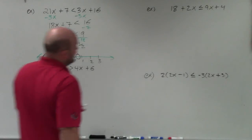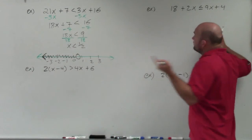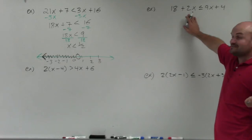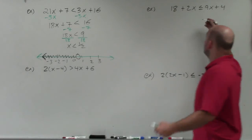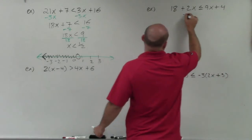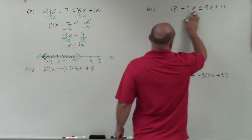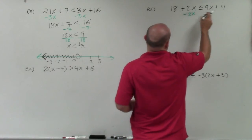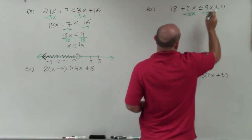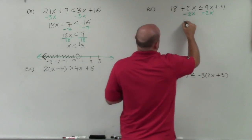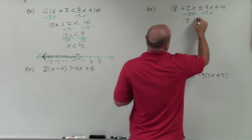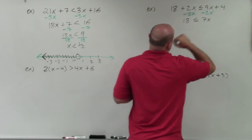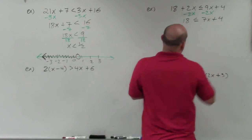Now let's get into the next example. In this case, getting the variable to the left side is going to make the coefficient negative, so I'm actually going to solve with the variable on the right side — which can be a little bit of an issue for many students, because it's not something you're as used to. So I have 18 is less than or equal to 7x plus 4.